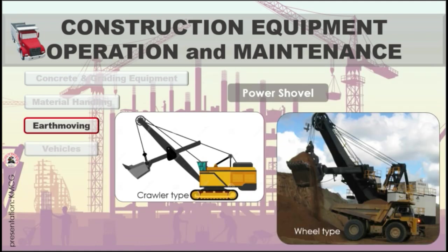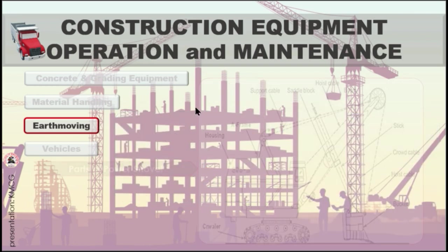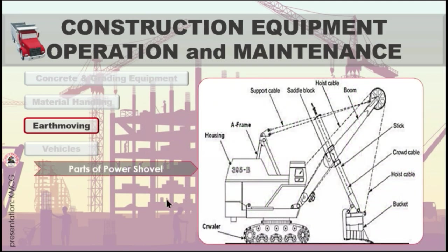The power shovel, also called a stripping shovel, front shovel, or electric mining shovel, is a bucket-equipped machine, usually electrically powered, used for digging and loading earth or fragmented rock and for mineral extraction. Power shovels are used for excavation and removal of overburden in open-cut mining operations, including loading of materials such as coal. The parts of the power shovel include the crawler, the housing, the A-frame, support cable, saddle block, hoist cable, the boom, the stick, the crowd cable, and the bucket.